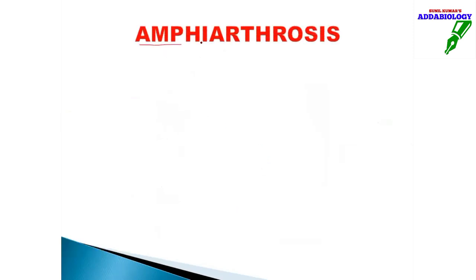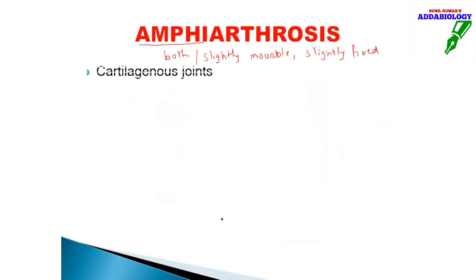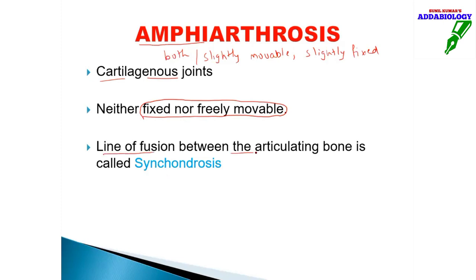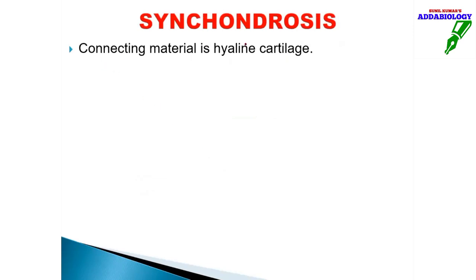Moving on to amphiarthrosis — 'amphi' means both. It is slightly movable and slightly fixed, showing very little movement. It is a cartilaginous joint — it has cartilage and is neither fixed nor freely movable. The line of fusion between the two articulating bones in amphiarthrosis is called synchondrosis — very important word. Unlike synarthrosis where the line of fusion was a suture, here it is called synchondrosis.